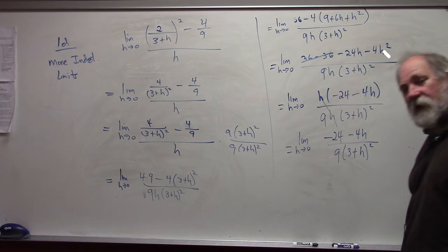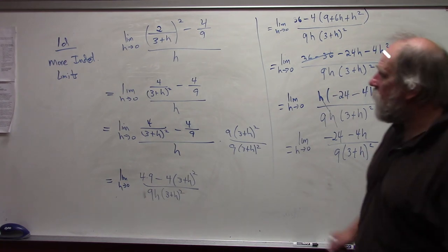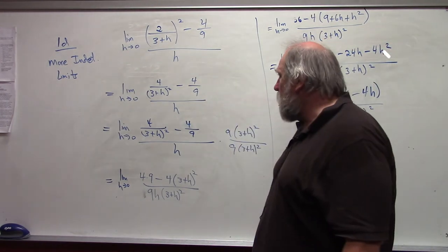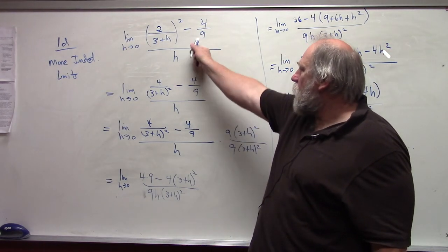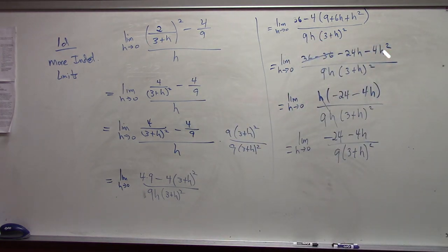Notice at this point, I have no problems. My original limit was indeterminate. I would have gotten 0 over 0. Now it is no longer indeterminate.